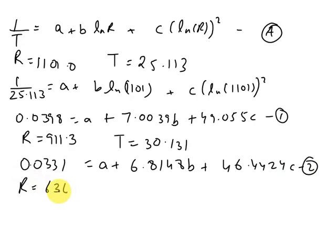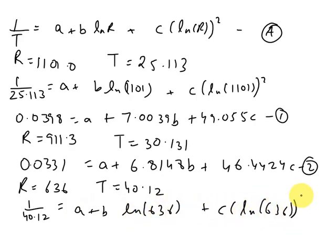Similarly, for R equals 636 and temperature is 40.12, so we have 1/40.12 equals A plus B ln(636) plus C times ln(636) whole square.